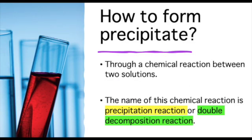How does a precipitate form? It is formed through a chemical reaction between two solutions. This chemical reaction can be called either a precipitation reaction or a double decomposition reaction.